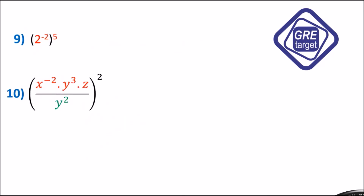Example 9: Applying the power rule to 2 raised to minus 2 raised to 5, we multiply the exponents: minus 2 times 5 gives 2 raised to minus 10, which expands to 1 divided by 2 raised to 10.